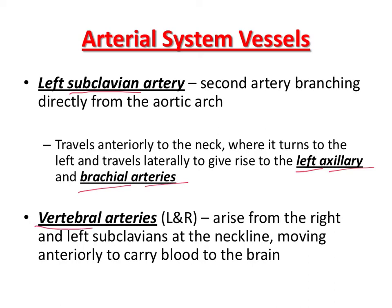The vertebral arteries are also important. These branch off of the right and left subclavian around your neckline and carry blood to your brain. The carotid arteries bring blood more to your face and the muscles of your head, while the vertebral arteries actually move through some of your vertebrae — protected deeper in your neck — and carry blood to your brain.